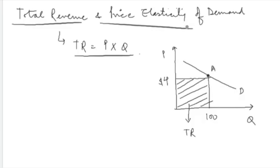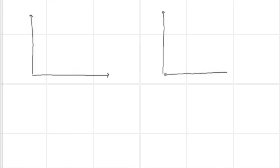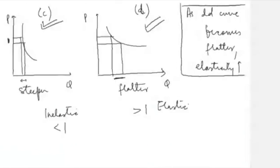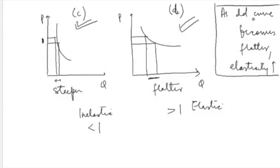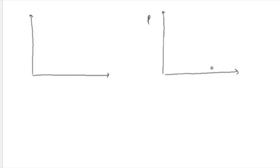Because we are talking about the relationship between price elasticity of demand and total revenue, we will look at different kinds of demand curves — some elastic, some inelastic. We will see what happens to total revenue when the demand curve is elastic, and what happens when it is inelastic. As the demand curve becomes flatter, elasticity increases. So I will take two demand curves: a flatter one representing elastic demand and a steeper one representing inelastic demand.